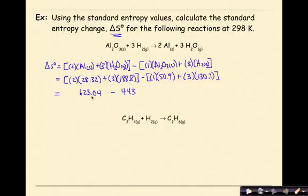minus 443, which represents my reactants, multiplied and added together. This will give me a final value of 180.04 joules per mole kelvin.